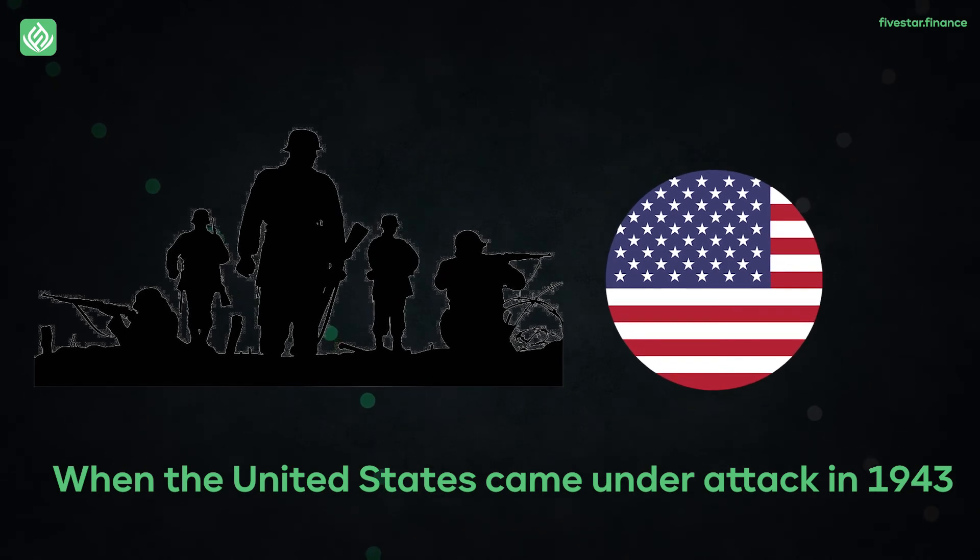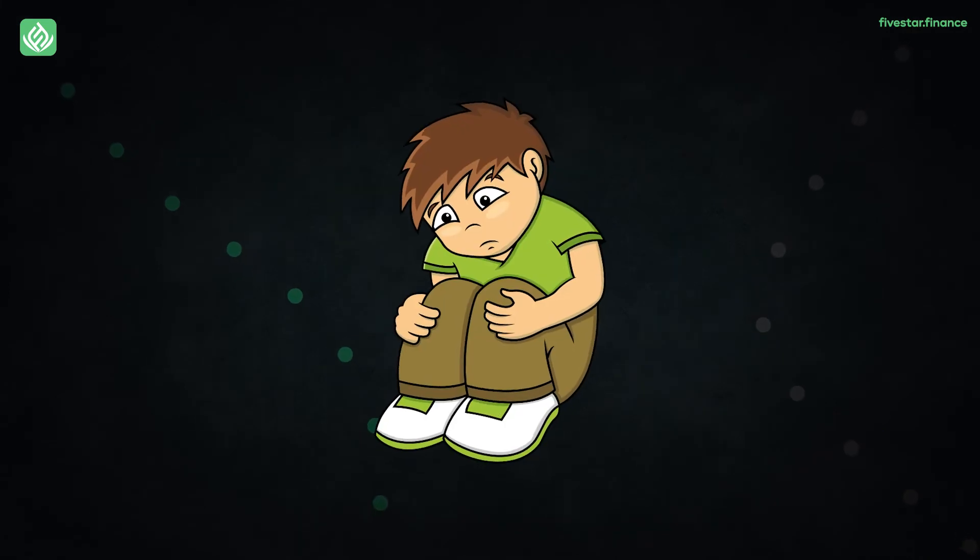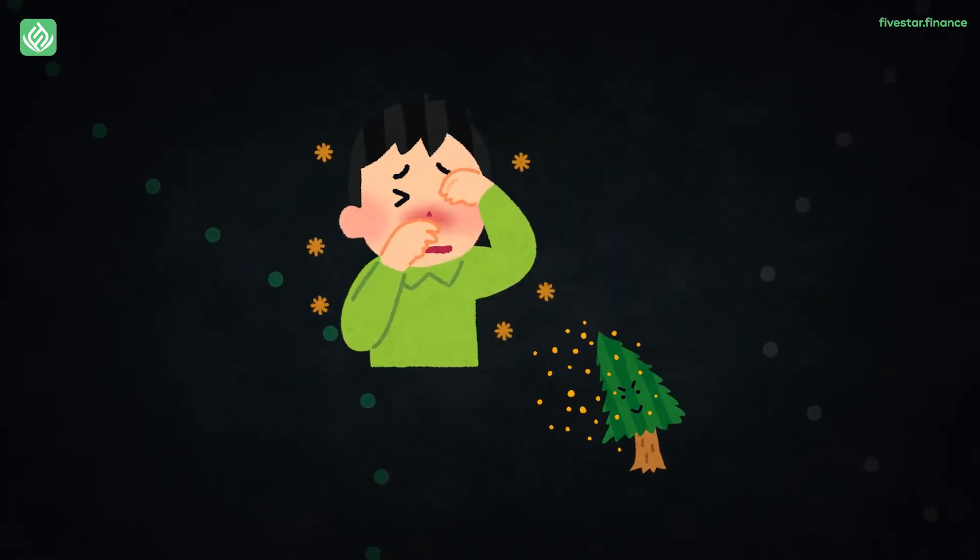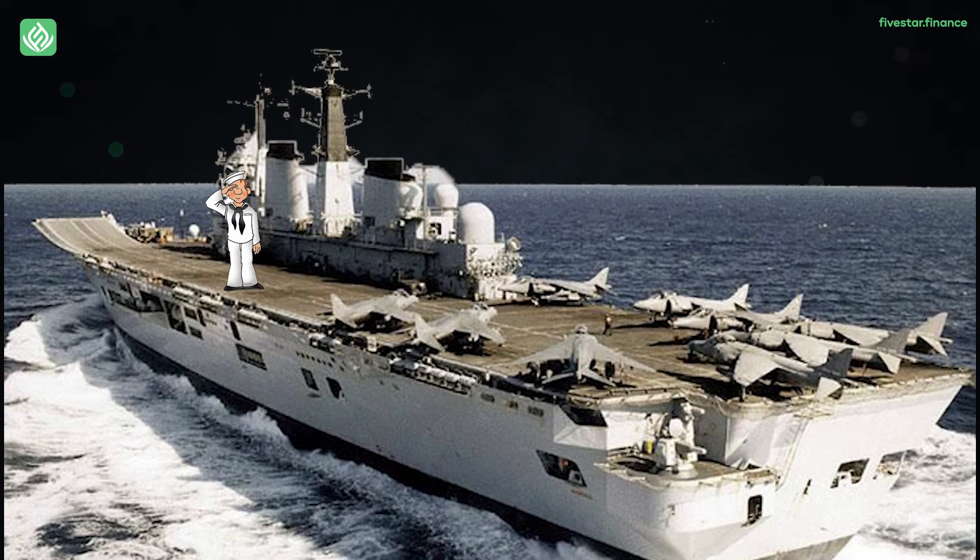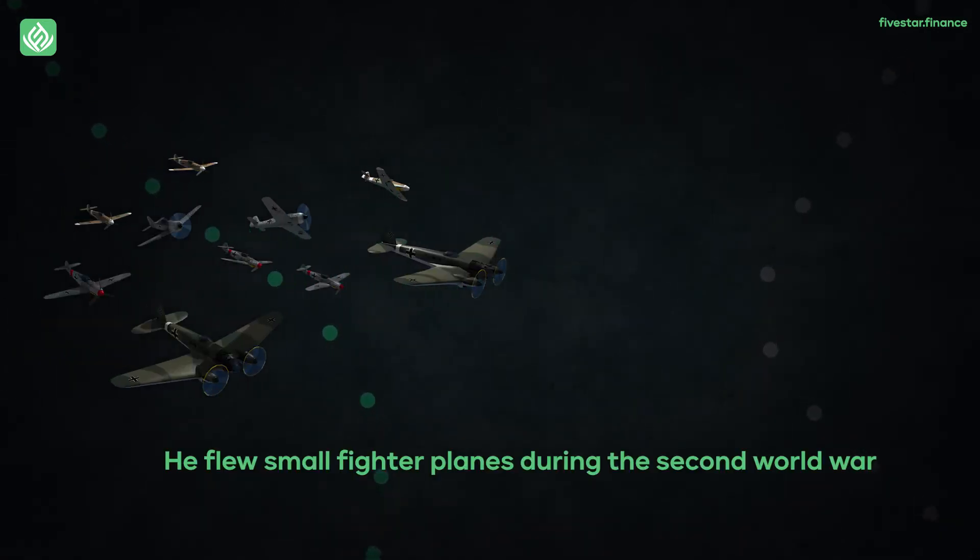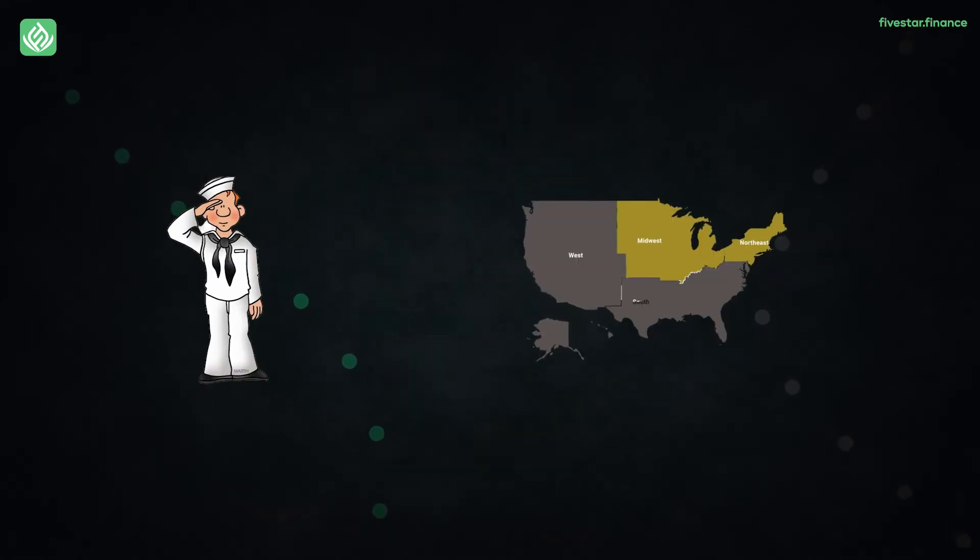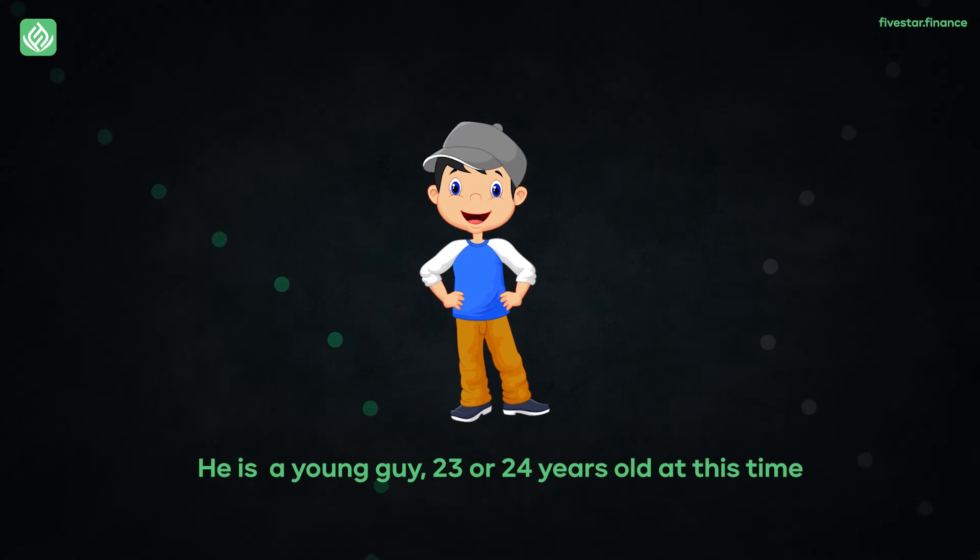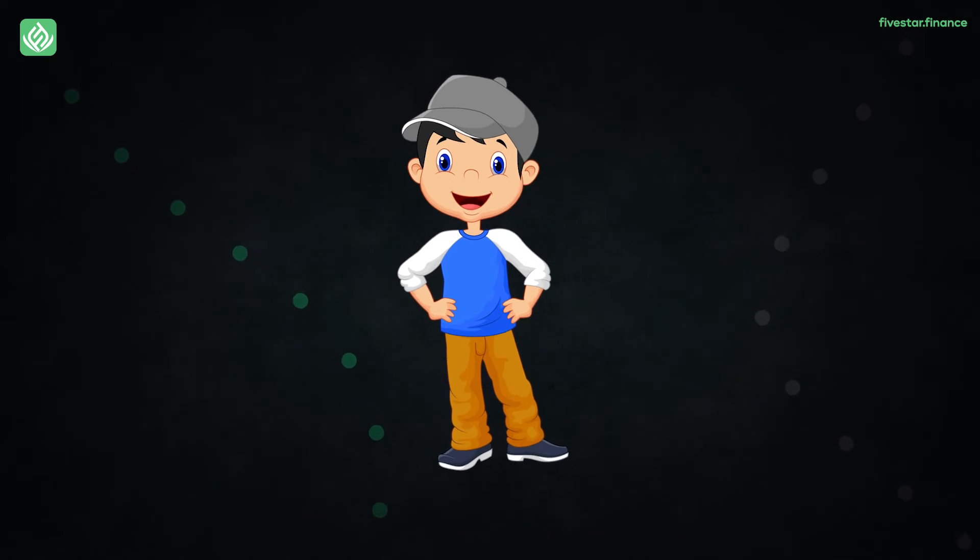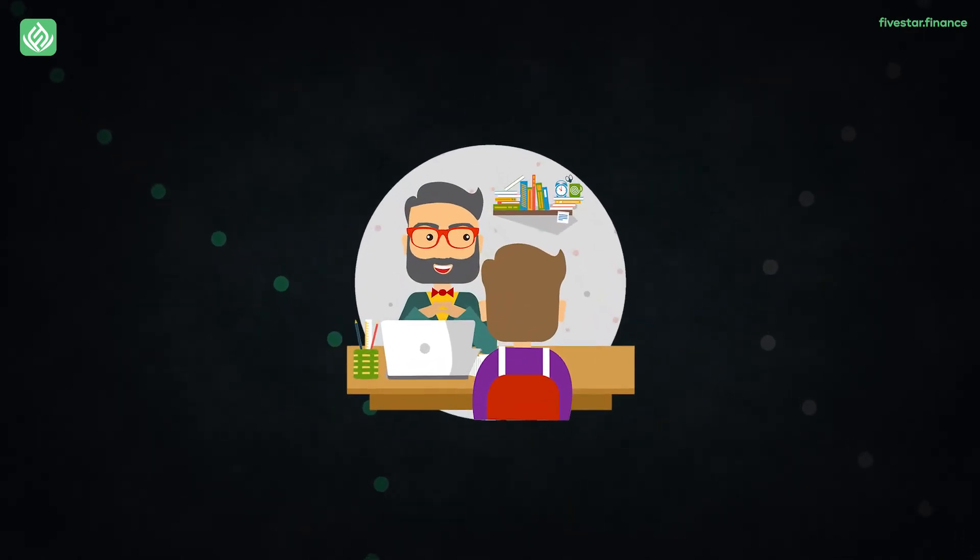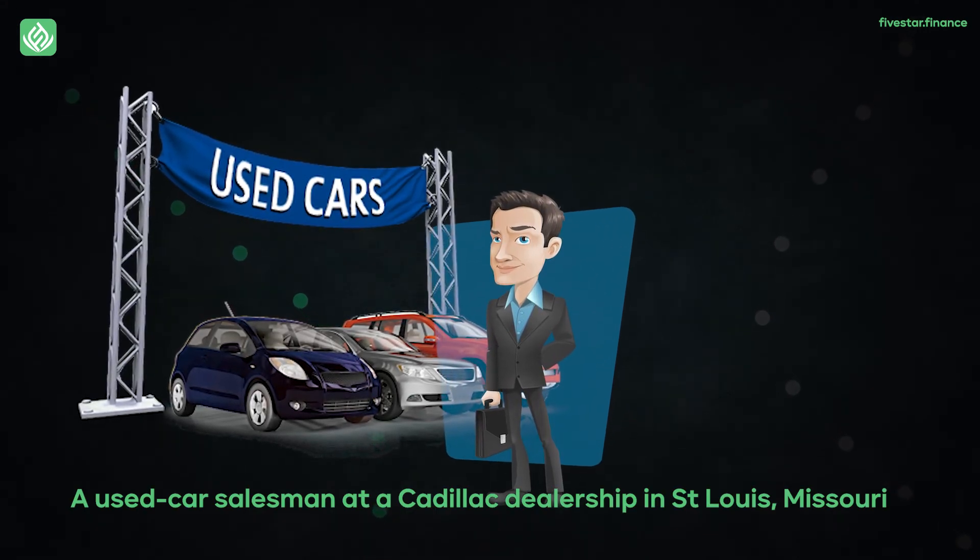And when the United States came under attack in 1943, he went to the Army Air Force recruiting station and volunteered. But they turned him down because he had a hay fever at that time. He went over to the Navy and again volunteered. They took him and put him on an aircraft carrier. So he flew small fighter planes during the Second World War. He won two Distinguished Flying Crosses from the Navy and when he came to the Midwest. Now he's a young guy, 23 or 24 years old at this time. The interesting part is that when he came to the Midwest, he went from one job to another for a short period. Then he finally became a used car salesman at a Cadillac dealership in St. Louis, Missouri.